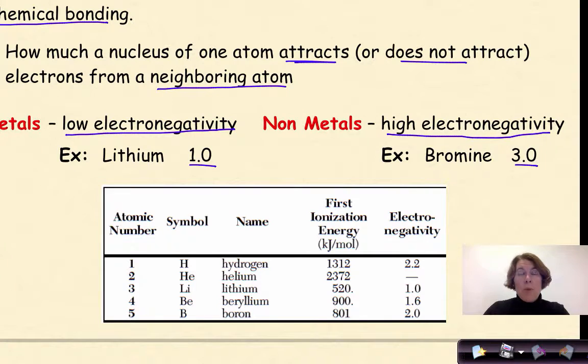Here is a snapshot from your reference table, Table S. If I look at them, I can see lithium has an electronegativity of one. Beryllium, another metal, has an electronegativity of 1.6, while hydrogen, which is a non-metal, has a much higher electronegativity of 2.2.